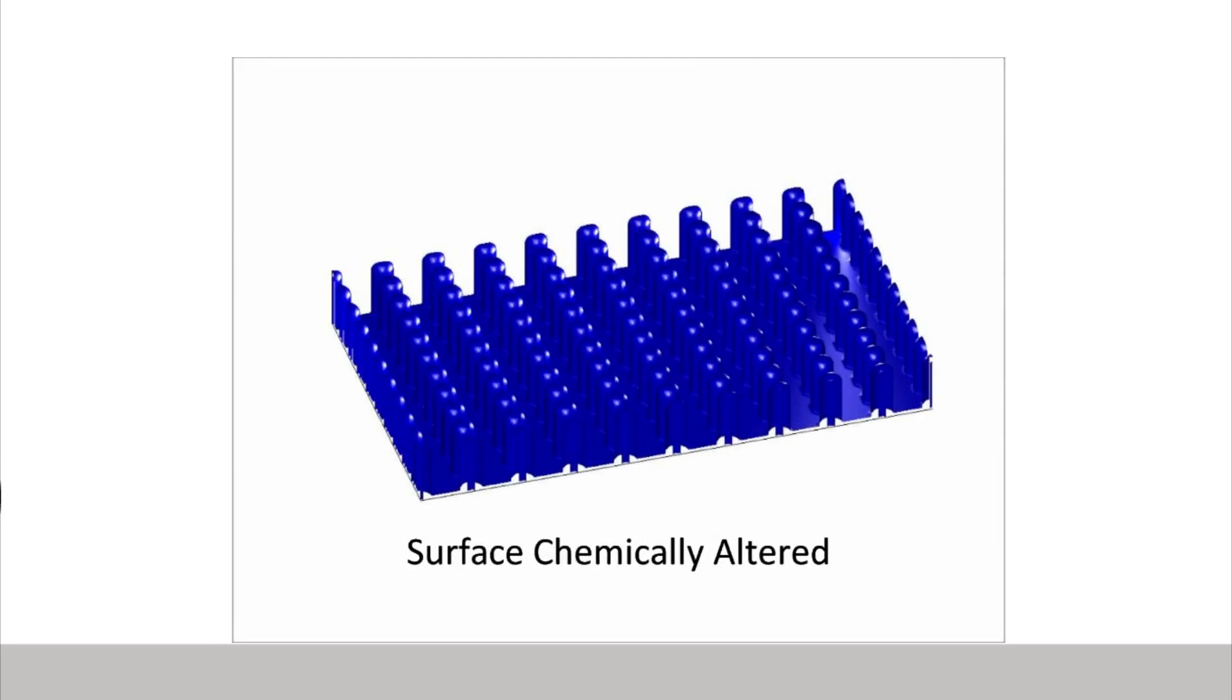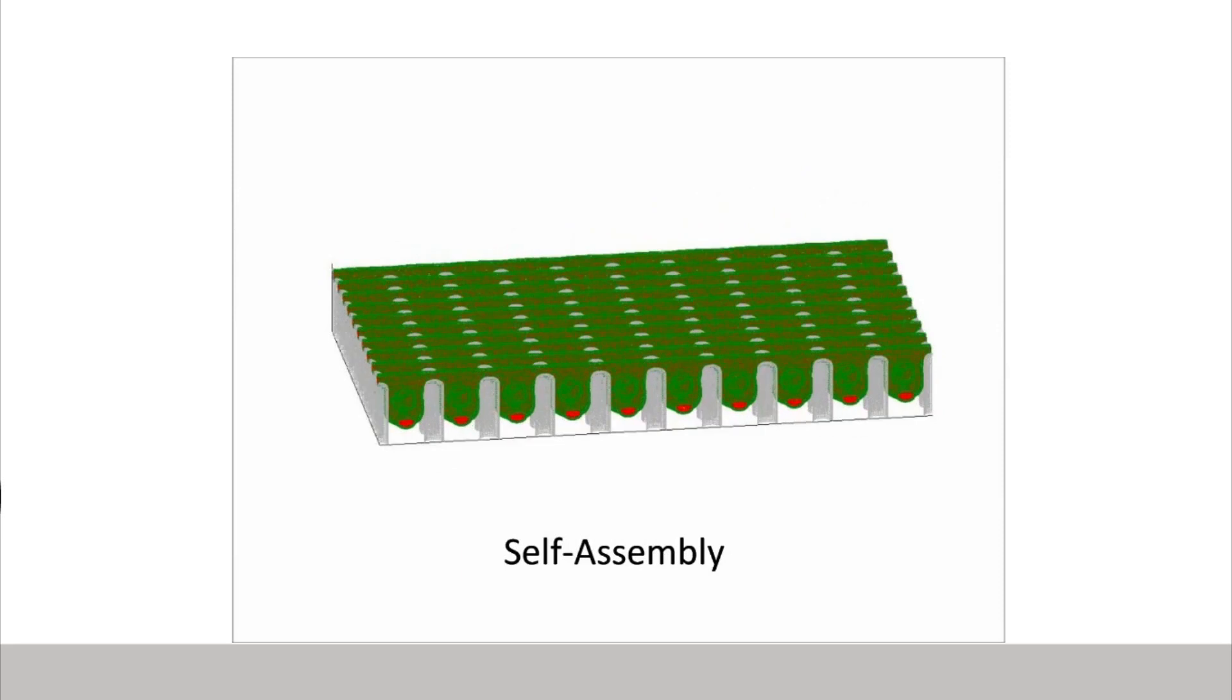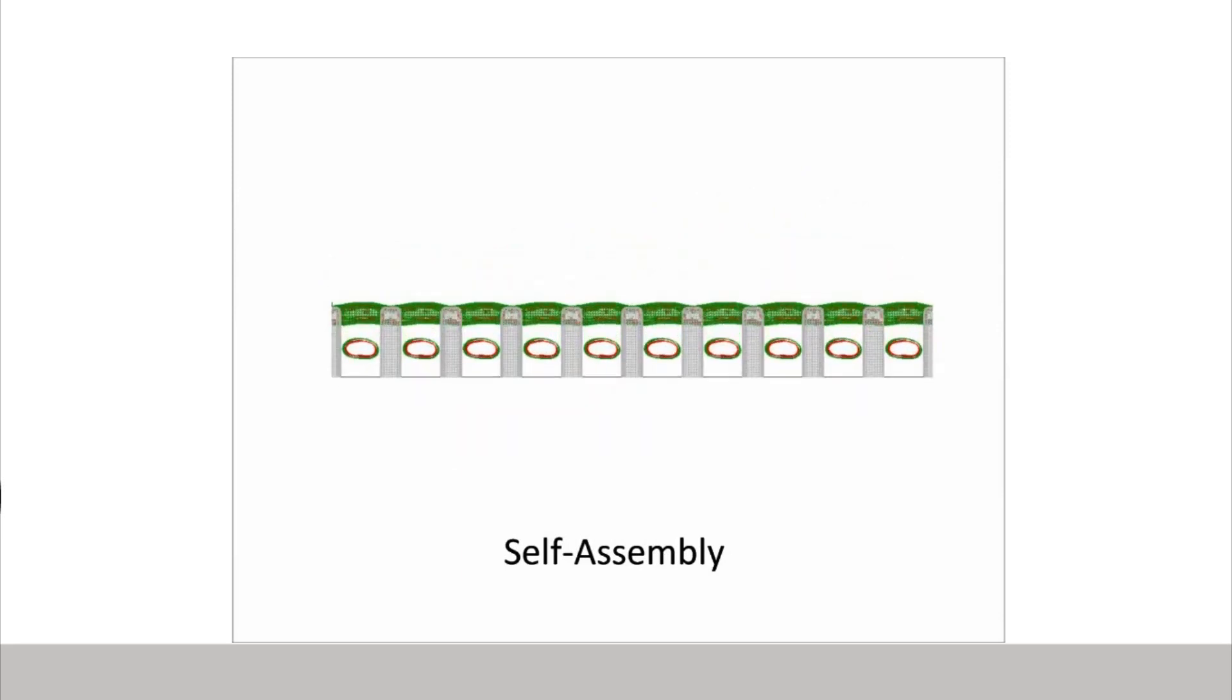We chemically alter the barriers to be repulsive to the self-assembled cylinders, and then introduce the diblock copolymers to the surface, allowing them to spontaneously self-assemble.